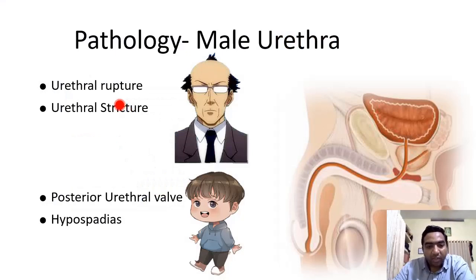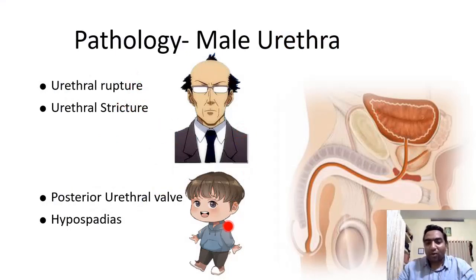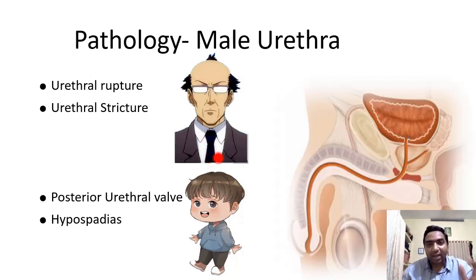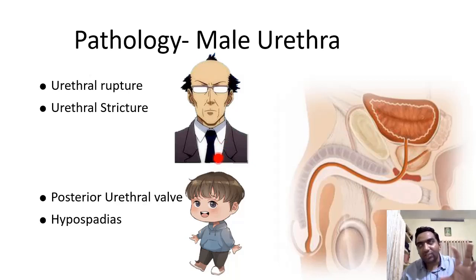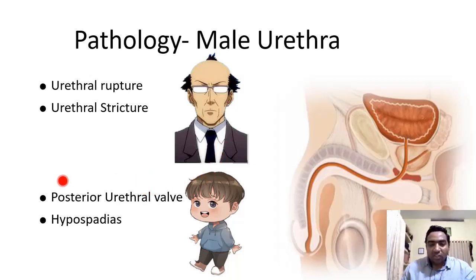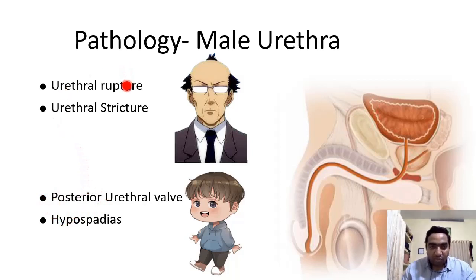Coming to the pathology of the male urethra: problems can be seen in the pediatric age group or in the adult age group. Problems in the pediatric age group are mainly posterior urethral valve and hypospadias, whereas problems of the male urethra in adults are urethral rupture and urethral stricture.